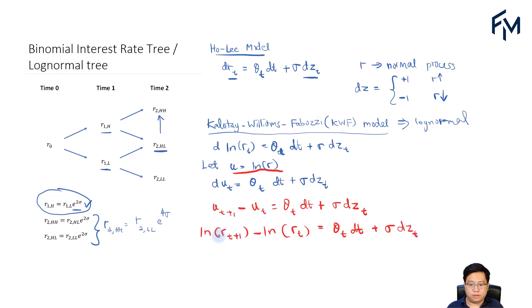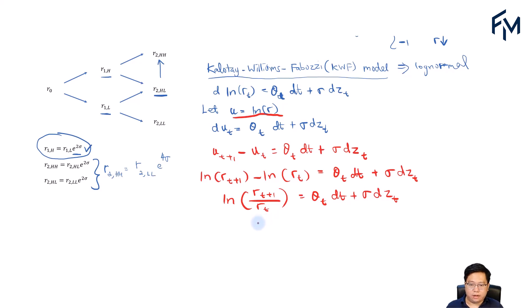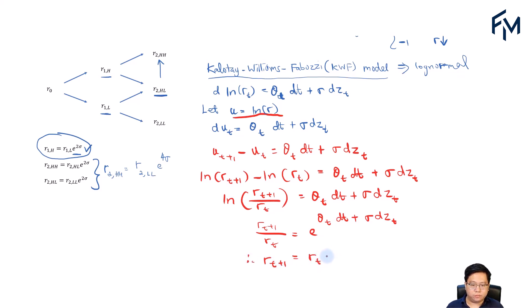Using the property of natural logs, ln(R sub T+1) minus ln(R sub T) equals ln(R sub T+1 over R sub T). Therefore, R sub T+1 over R sub T equals e to the power of theta T dt plus sigma dz sub T. Multiplying R sub T to the other side, we get R sub T+1 equals R sub T times e to the power of theta T dt plus sigma dz sub T.